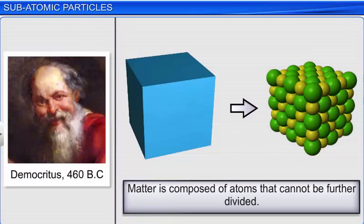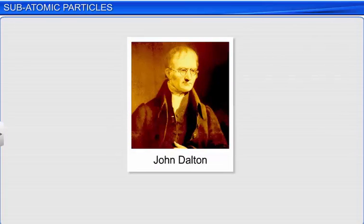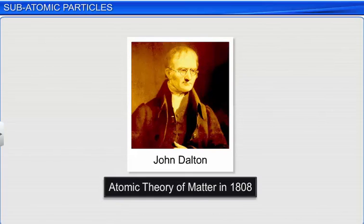This idea was first proposed by the Greek philosopher Democritus back in 460 BC. However, due to the lack of scientific evidence, Democritus's ideas were considered mere speculations and ignored for 2000 years, until John Dalton proposed the atomic theory of matter in 1808.